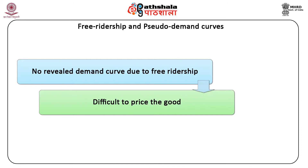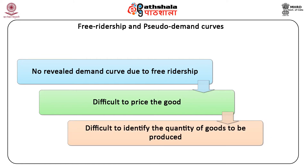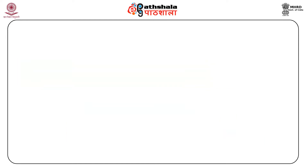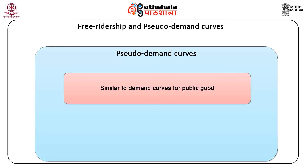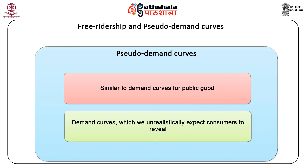How the good should be priced and how much quantity should be produced becomes an extremely challenging question. Given the incentive to act as a free rider, it is unrealistic to assume that consumers will reveal their true demand for a public good. In this type of situation, theoretically pseudo-demand curves are used. Pseudo-demand curves are similar to demand curves for public goods but are not exactly that — they are the demand curves which we unrealistically expect consumers to reveal.